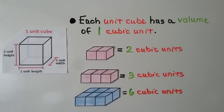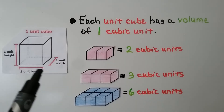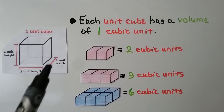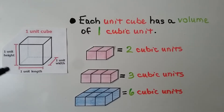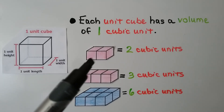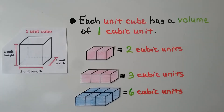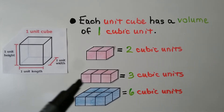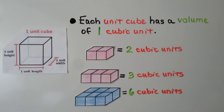Each unit cube has a volume of 1 cubic unit — it's 1 unit length, 1 unit width, and 1 unit height. If we have 2 of them, it's 2 cubic units. If we have 3 of them, it's 3 cubic units. If we have 6 of them, it's 6 cubic units.